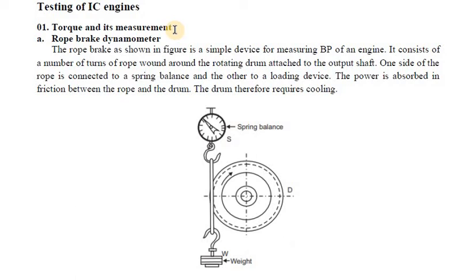To measure the output torque of the crankshaft or the IC engine, in order to measure the brake power, we use the rope brake dynamometer. This is a device you can see in the heat engine lab, also called the IC engine lab or energy conversion lab. The rope brake dynamometer is connected to the crankshaft to easily find its torque. I'll explain how this device works using the schematic diagram.